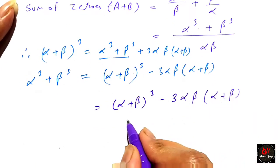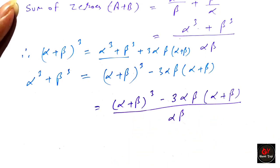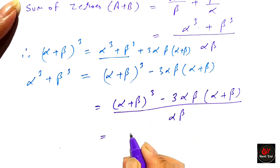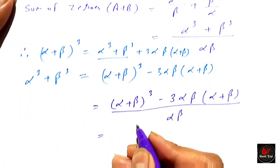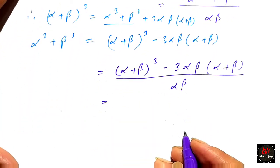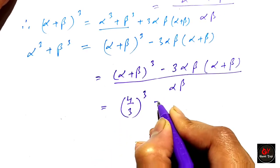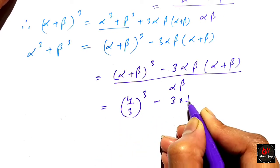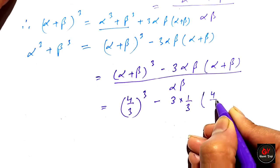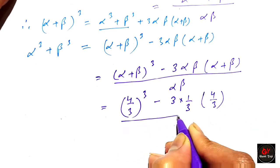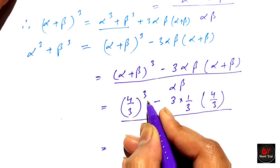So the sum of new zeros equals (alpha cubed plus beta cubed) over alpha beta, which gives us (alpha plus beta)³ minus 3 alpha beta times alpha plus beta, all over alpha beta. We now substitute: alpha plus beta equals 4 over 3 and alpha beta equals 1 over 3. So we get (4/3)³ minus 3 times (1/3) times (4/3), all divided by 1 over 3.